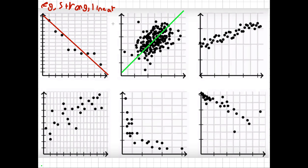So as you can see, it's positive — because as it goes this way, it also goes up, and those are both positive. If it goes up, it's positive; if it goes down, it's negative. I would say this is a weak relationship, because most of the data points are far off. And it is linear.